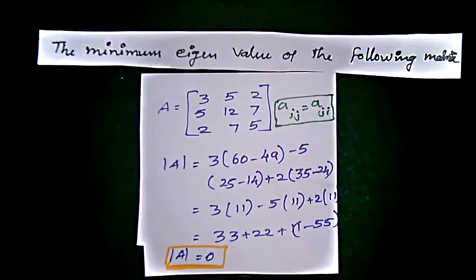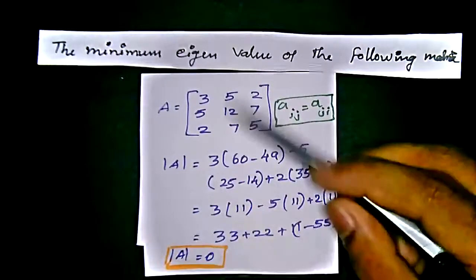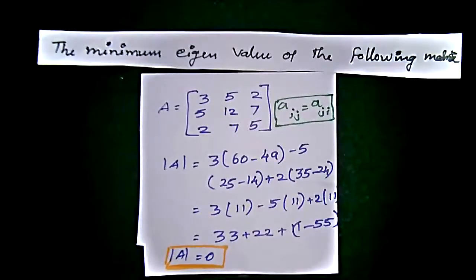So minimum eigenvalue of the matrix is given as 0. In the other method, if we do not have the zero value for the determinant of the matrix, we should go for the characteristic equation method, like putting the minus lambda value here and finding the characteristic equation.